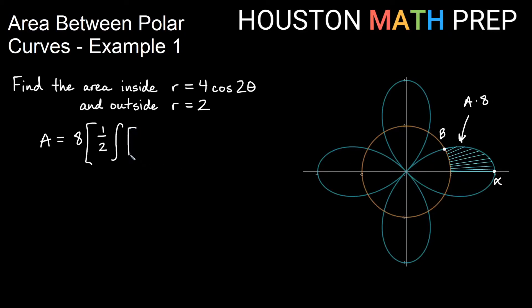So my outer function, don't look at these and necessarily see outside and inside and draw from that. Think about from our picture. Going out, my outer function, the function farther away from the pole, is my graph with the petals, my rose-shaped thing, which is 4 cosine 2 theta.